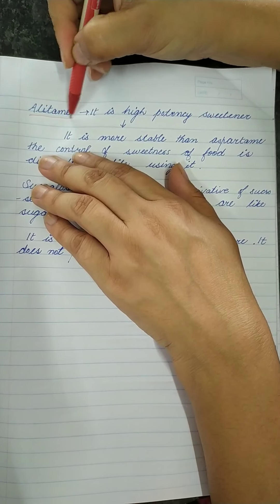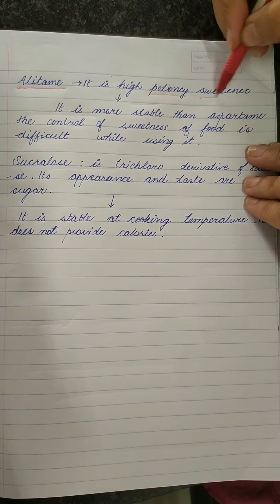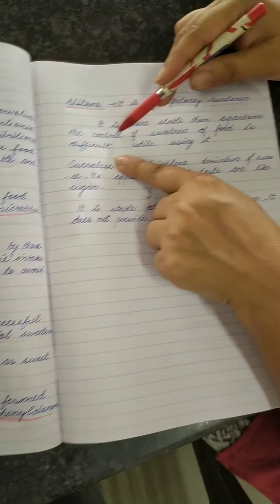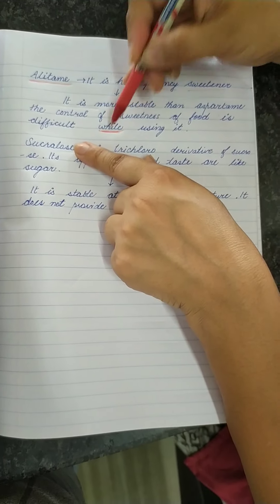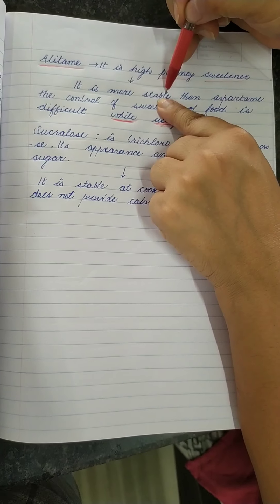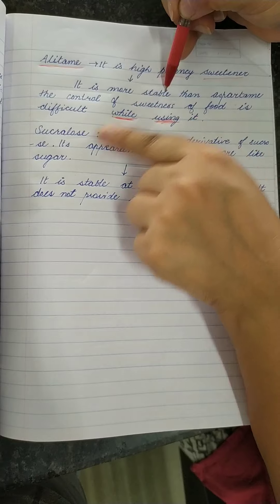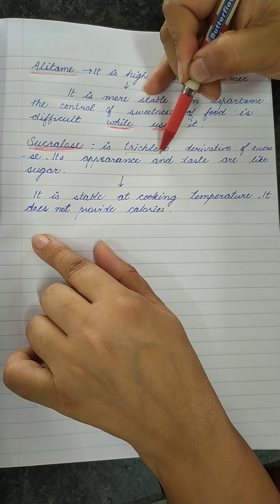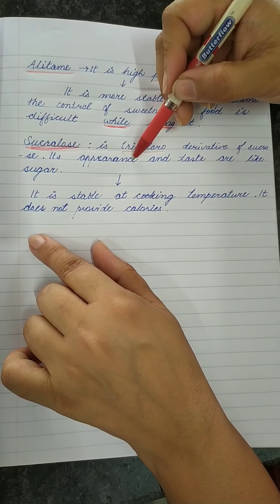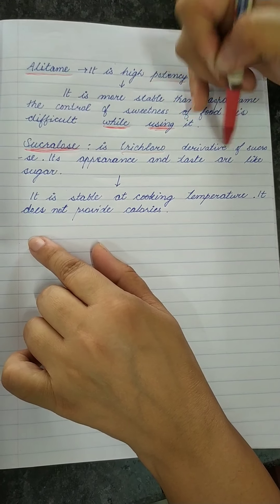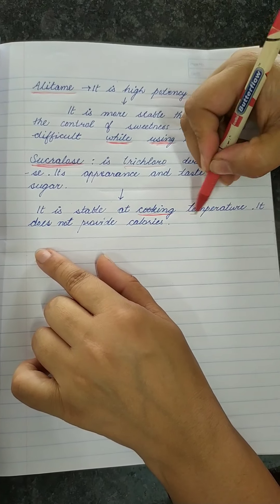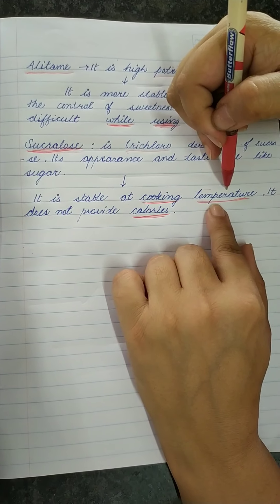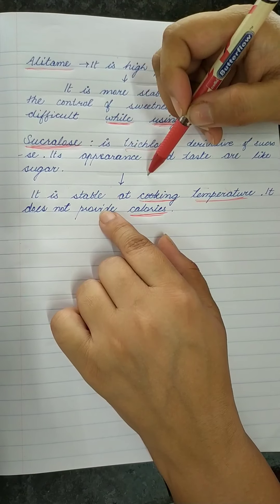Alitame is a highly potent sweetener, more stable than aspartame, and it controls the sweetness of food. Sucralose is a trichloro-derivative of sucrose. Its appearance and taste are similar to sugar, it is stable at cooking temperatures, and it does not provide calories — making it suitable for regular consumption.